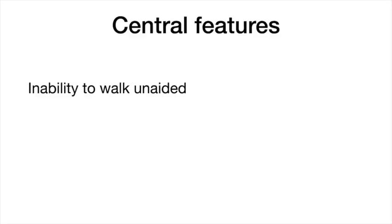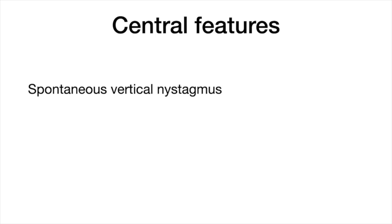Her legs also showed normal movement and no ataxia. You should always test the patient with acute vestibular syndrome for their ability to walk. As I said, she could walk unaided, but definitely had some difficulty doing it. Also look for spontaneous vertical nystagmus. Our patient didn't have any, even when looking up, as I'll show you in a second.